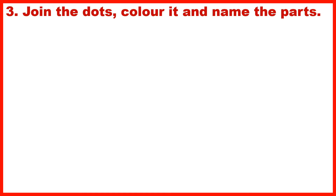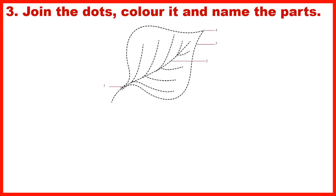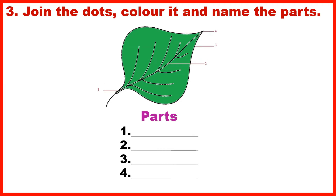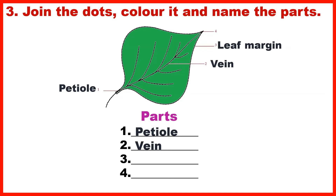Section 3: Join the dots, colour it and name the parts. Parts of the leaf: Petiole, Vein, Leaf Margin, Apex.